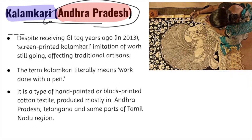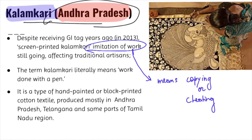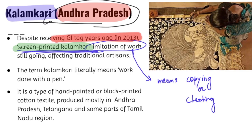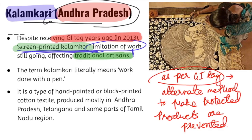Kalamkari paintings were in news because they are suffering from imitation of work, mainly from screen-printed Kalamkari. These paintings received the GI tag back in 2013, but despite having the tag, imitation continues and traditional artisans are suffering. As per the GI tag, it should prevent the usage of alternative methods to make the protected product.